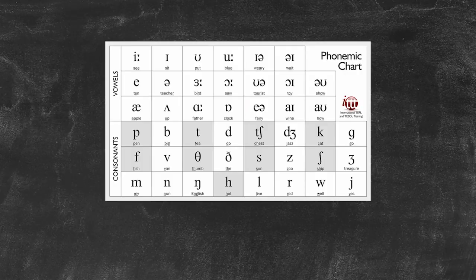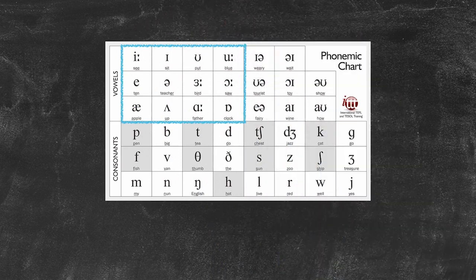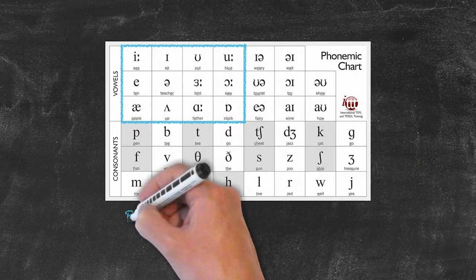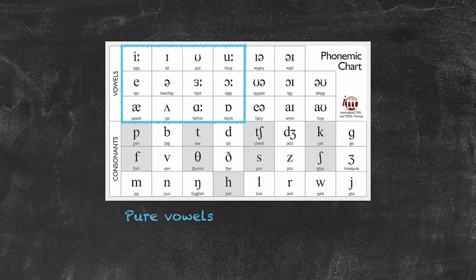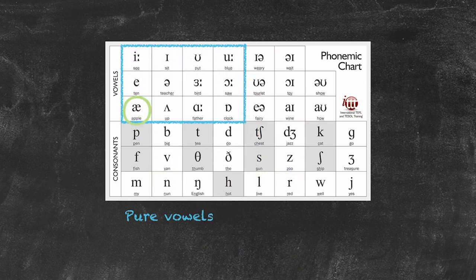The top half of our chart is concerned with the vowel sounds and it's split into two parts. On the left hand side we have our twelve pure vowels. They're one individual unit of sound which corresponds to a vowel sound, such as ah as in pat.